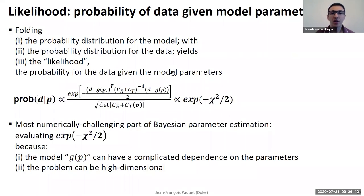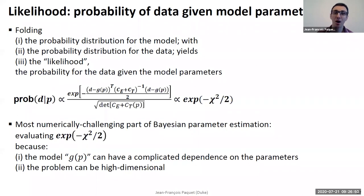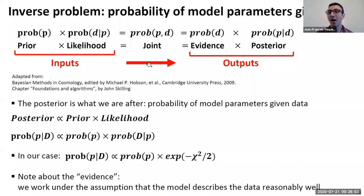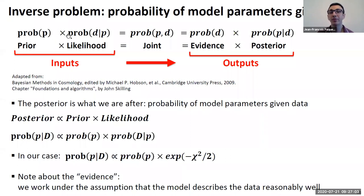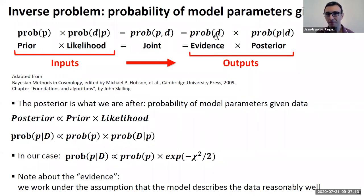The likelihood gives you the probability of the data given the parameters, but we want exactly the opposite — the probability of the parameters given the data. That's given by Bayes' theorem: the probability of the data given the parameters, times the probability of the parameters, equals the probability of the parameters given the data, times the probability of the data.